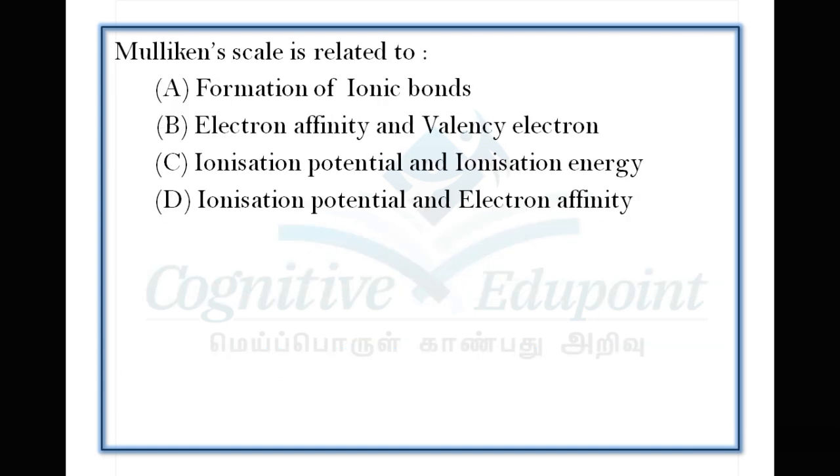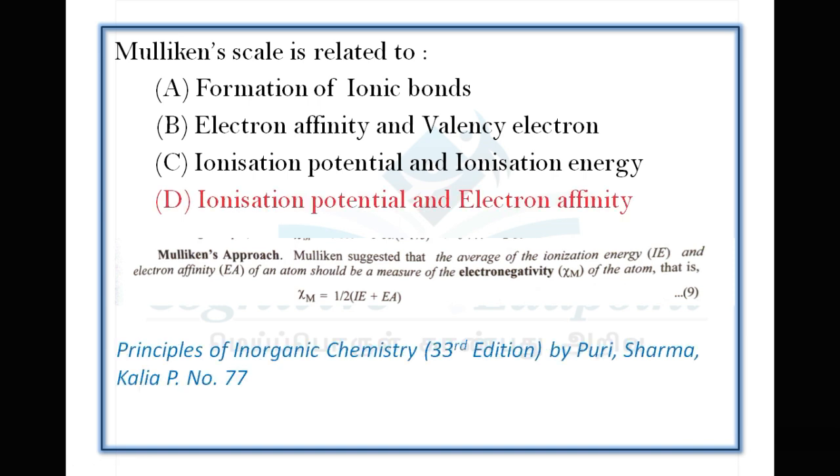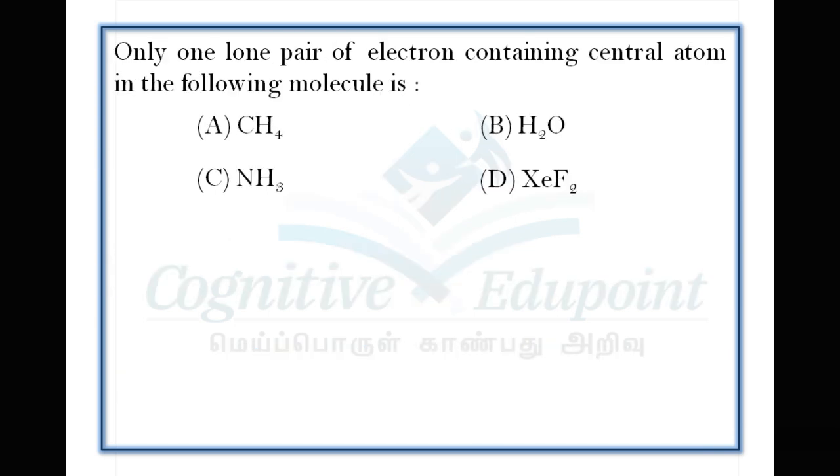Next question: Mulliken scale is related to what? Mulliken's approach calculates the electronegativity of the atom using ionization potential and electron affinity of the molecule. Easy, direct question. The answer is electronegativity. It uses ionization potential and electron affinity. Correct answer is D.